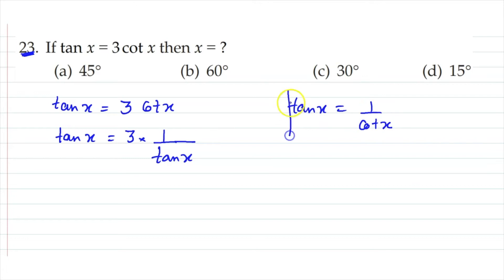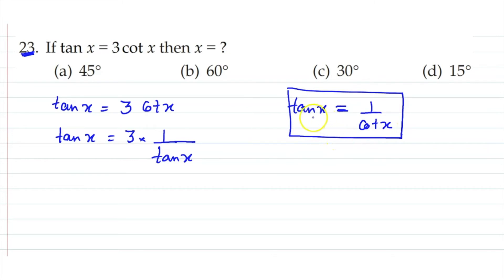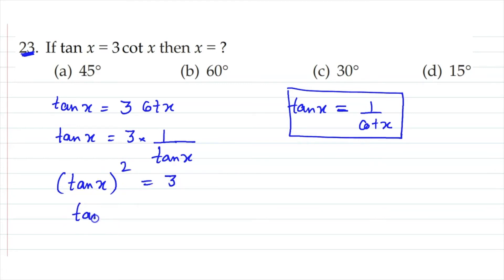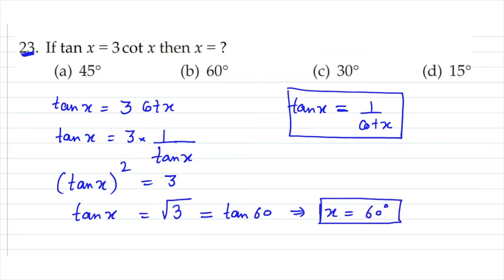This is the next level question involving reciprocals and formulas. We have tan²x equals 3. Taking square root, tan x equals √3 — it is positive, not negative at this level. Where is tan x equal to √3? That is the value of tan 60°. So x equals 60°. Answer is option B.